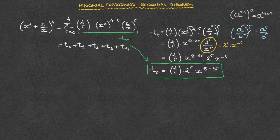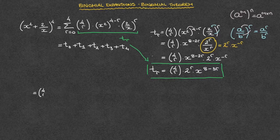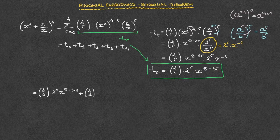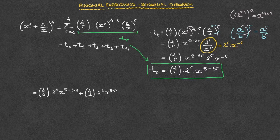We can now state that this equals t0, so I replace every single r I see by 0. So that's the binomial coefficient 4, 0, times 2 raised to the power of 0, times x raised to the power of 8 minus 3 times 0. Plus t1, for which I replace every single r by 1. So that's 4, 1, times 2 raised to the power of 1, times x raised to the power of 8 minus 3 times 1. Plus the term where I replace every single r by 2.